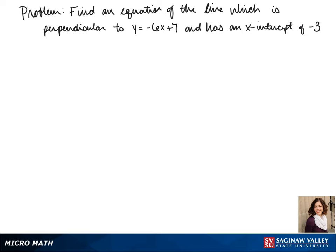Welcome to another day of algebra. Today we'll be finding an equation of the line which is perpendicular to y equals negative 6x plus 7 and has an x-intercept of negative 3.